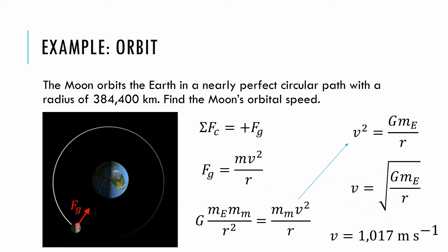To get the numerical value, we look up the mass of the Earth and the radius of the Moon's orbit — being careful about kilometers versus meters. You should find that the Moon is traveling at about 1,000 meters per second in tangential speed. Very fast. The only force acting on it is the force of gravity because it's in free fall.